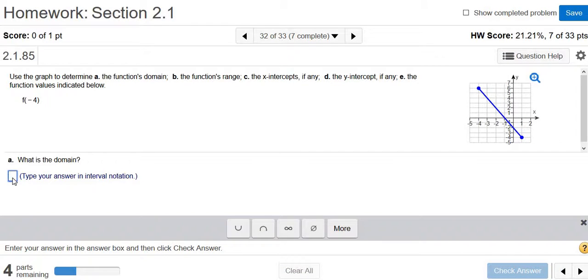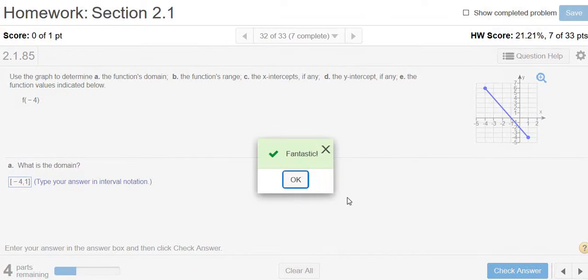We will use brackets for both the negative 4 and the 1 because they're both included—we have these solid dots. So negative 4 to 1, those are all the x values that give us y values. Check answer.